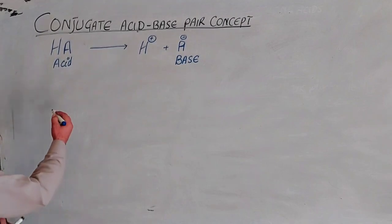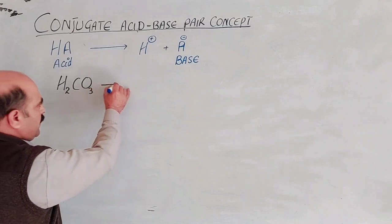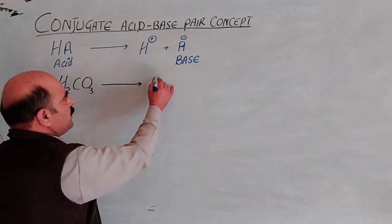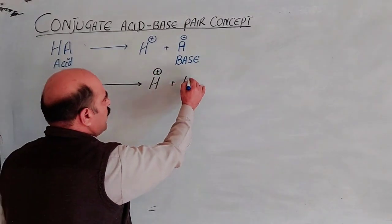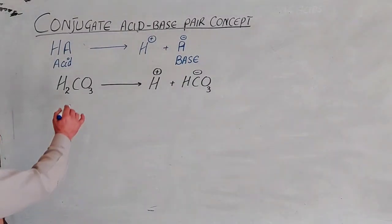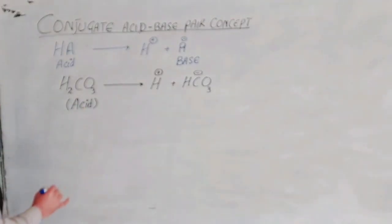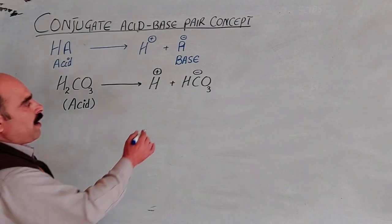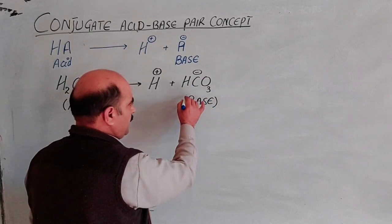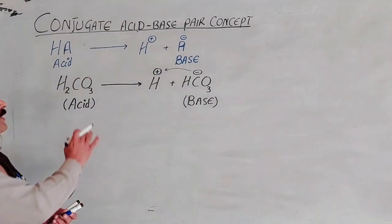As an example, carbonic acid H₂CO₃ dissociates — without water — to provide a hydrogen ion and a hydrogen carbonate ion, also called bicarbonate ion. According to Lowry and Bronsted, carbonic acid is an acid because it is a proton provider, and bicarbonate ion is a base because it is a proton acceptor species.